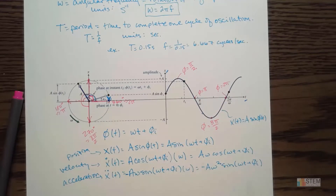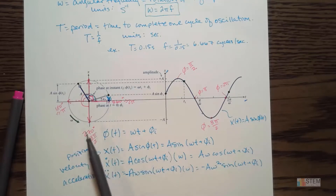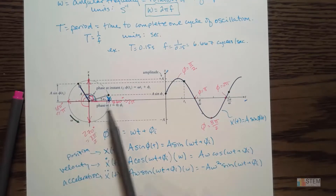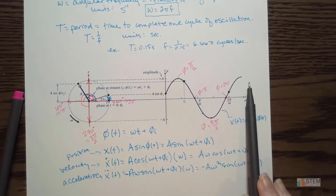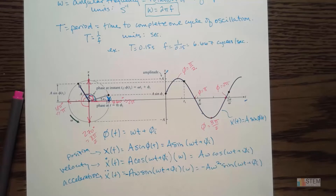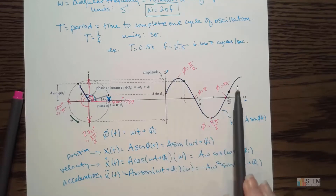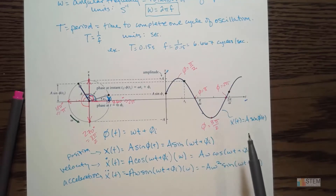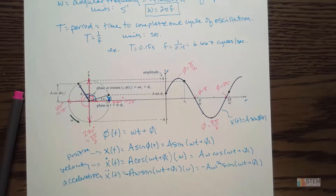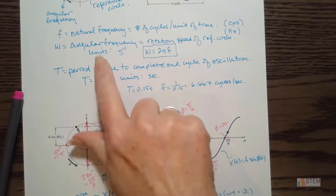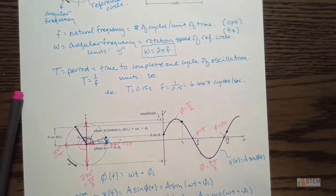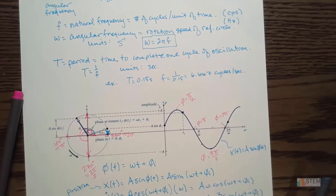So we got all of this information just using this one little reference circle. The reference circle is what gives us this wave, and the frequency and period tell us more about the behavior of that curve.